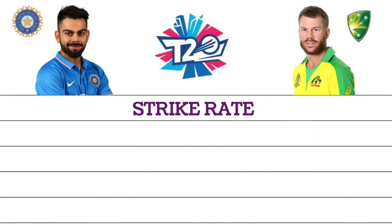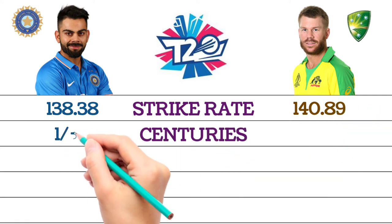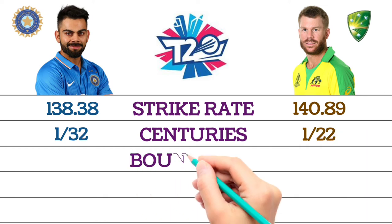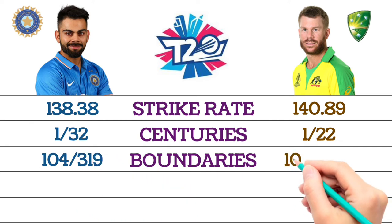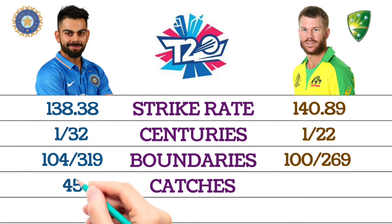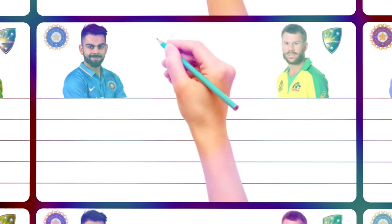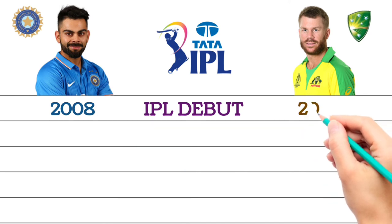T20 strike rate: Virat Kohli 138.38, David Warner 140.89. Centuries: Virat Kohli 1 century and 32 half-centuries, David Warner 1 century and 22 half-centuries. Boundaries: Virat Kohli 104 sixes and 319 fours, David Warner 106 sixes and 269 fours. Catches: Virat Kohli 45, David Warner 50. T20 ICC rank: Virat Kohli number 29, David Warner number 38.